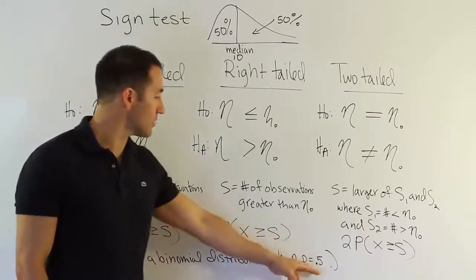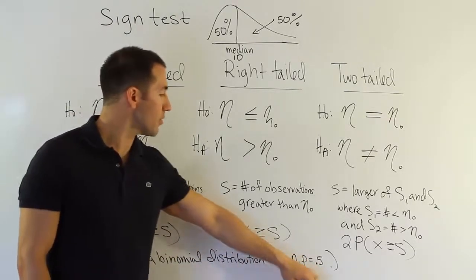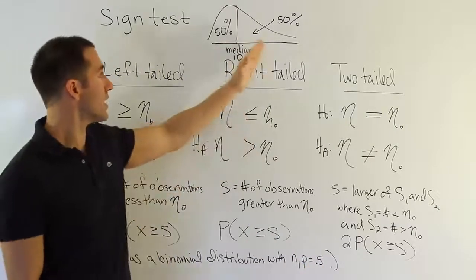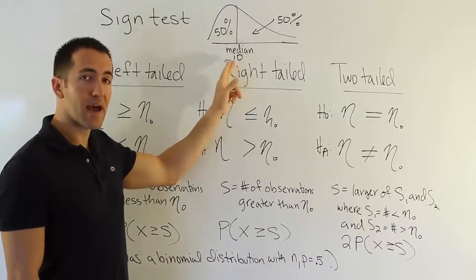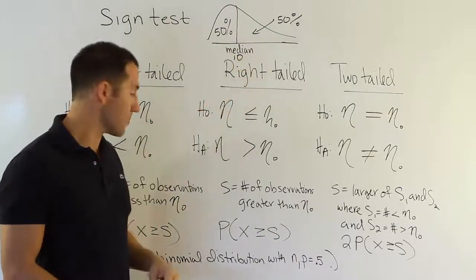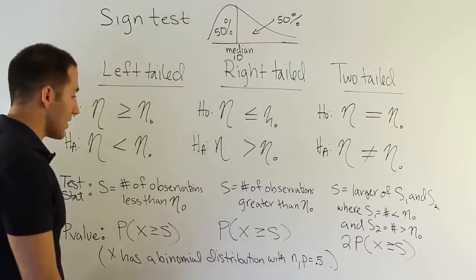And then I would calculate the probability that this binomial random variable is greater than or equal to S, given this assumption. Again, why the probability of 0.5? Because there's a 50-50 chance that I would wait longer than that if that was, in fact, the median. Okay, so that's basically the logic of the test.